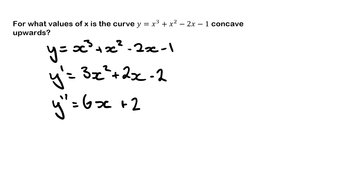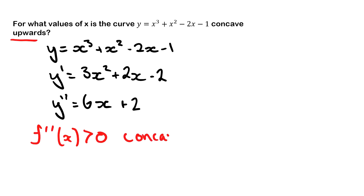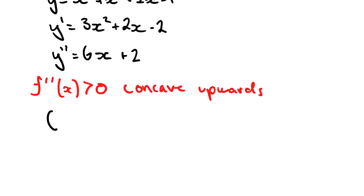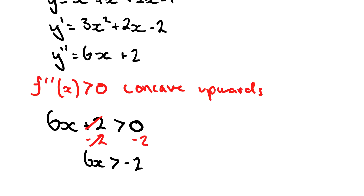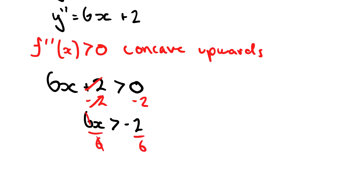The key part of the question is asking us to find when the curve is concave upwards. We know the second derivative greater than zero means concave upwards, so we set 6x plus 2 greater than zero. This is a normal inequality and we solve it as such, giving us x is greater than negative one third. So when x is greater than negative one third, our graph is concave upwards.